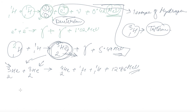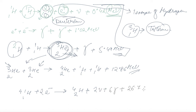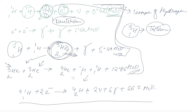Looking at the overall count: 4(1H1) plus 2 electrons gives He plus 2 neutrons plus 6 gamma plus 26.7 MeV. If you combine all of these reactions, the net reaction is given as 4(1H1) → He-4. This is the net reaction that is actually happening in the Sun.